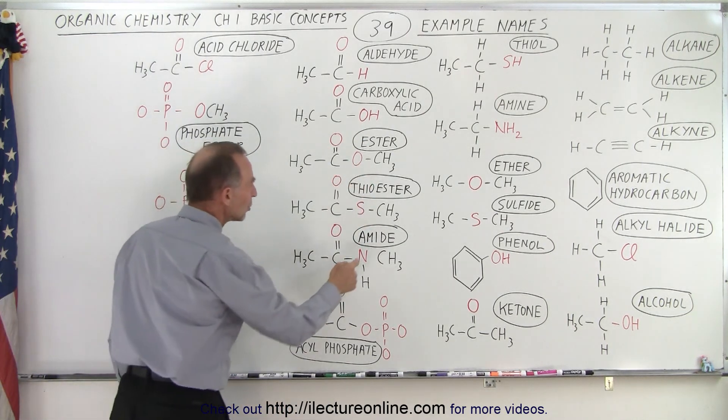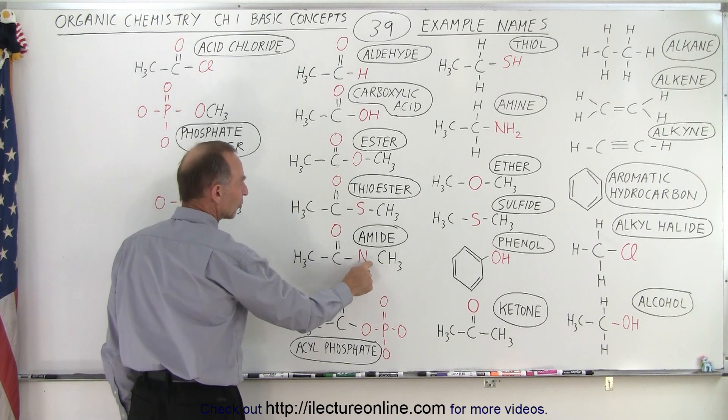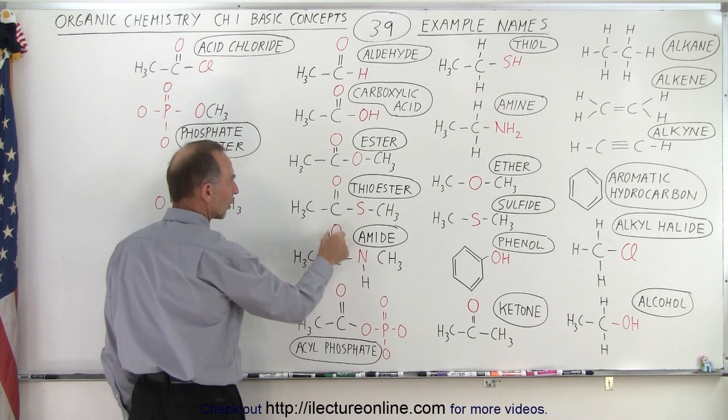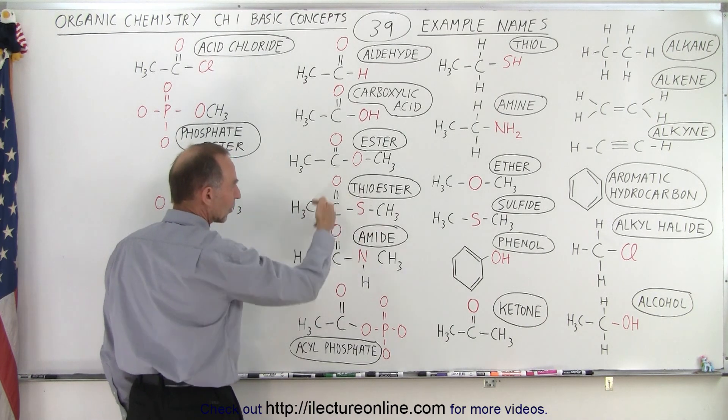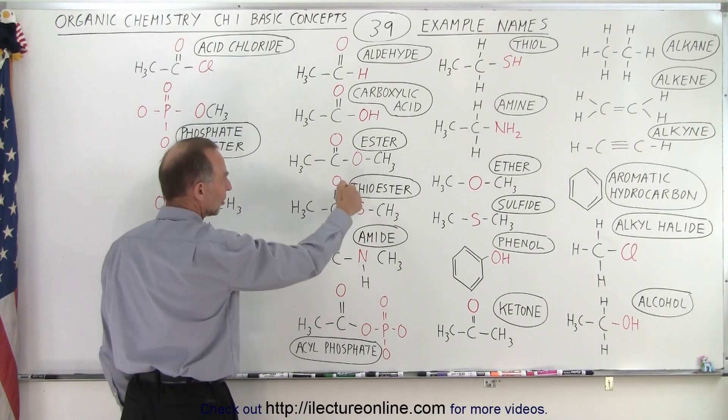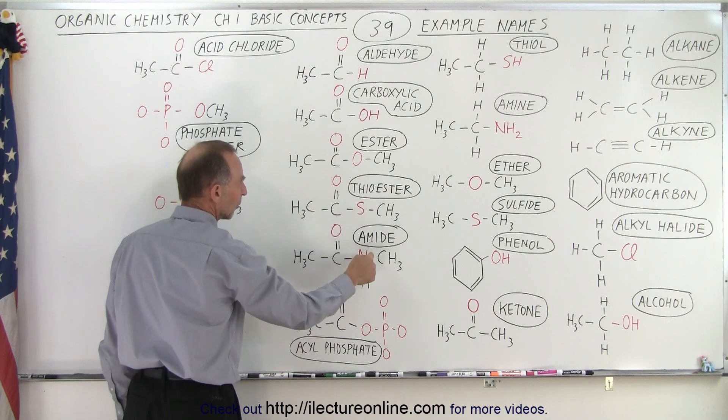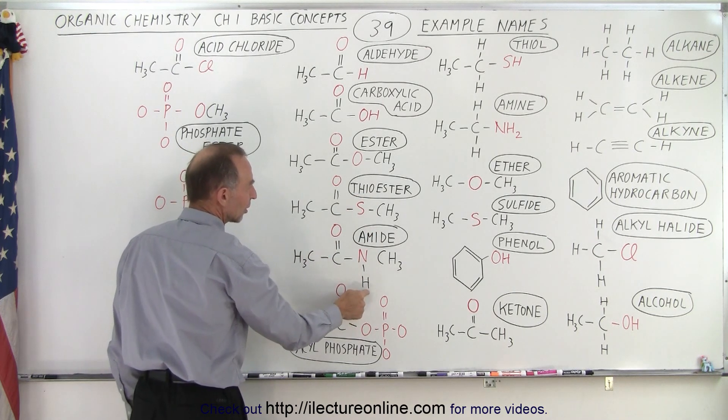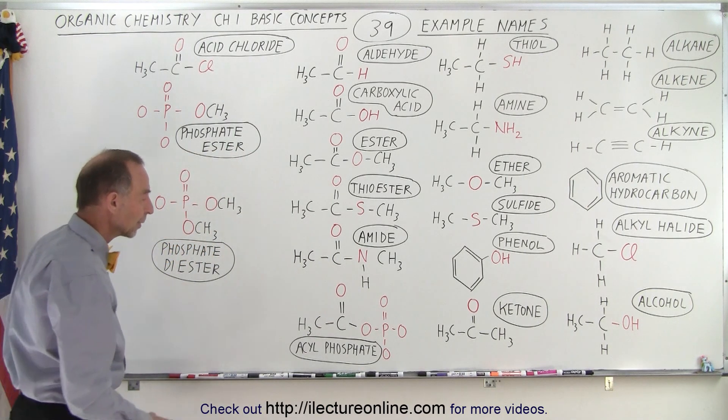Whenever we see amide we know there is going to be a nitrogen somewhere. So in this case we do have a nitrogen attached to a carbon chain with a double bonded oxygen to the last carbon. Notice it looks very much like an ester, but instead of having an oxygen there or sulfur for a thioester, we have a nitrogen there for an amide. But we still need an extra hydrogen there for the extra bond that the nitrogen needs.